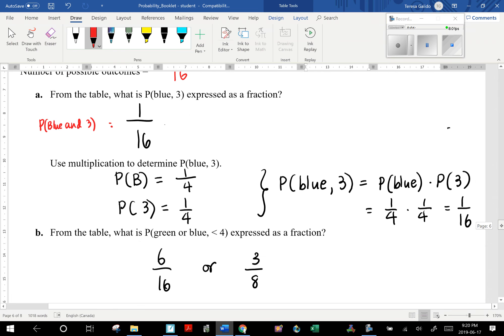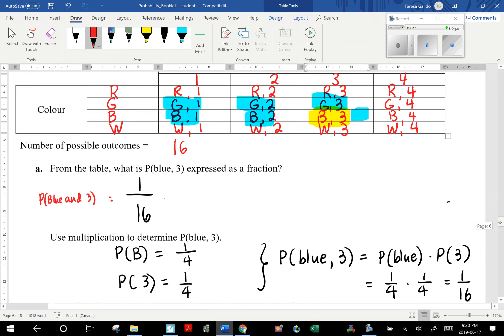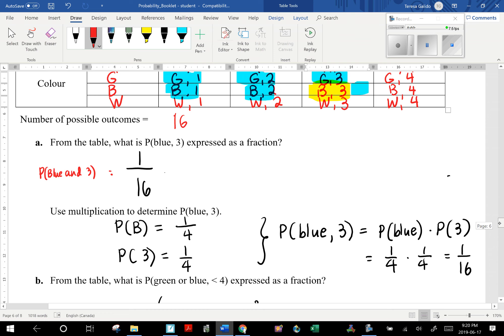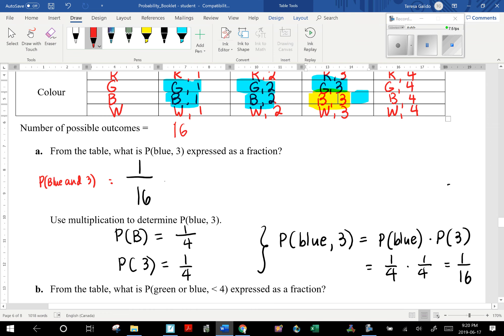How do we use multiplication to determine the probability of getting a blue and 3? As we know, the probability of getting a blue from the colored spinner is 1 out of 4. The probability of getting a 3 on the die is also 1 out of 4.